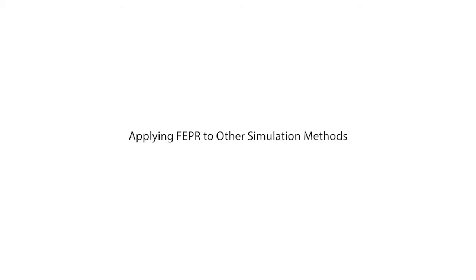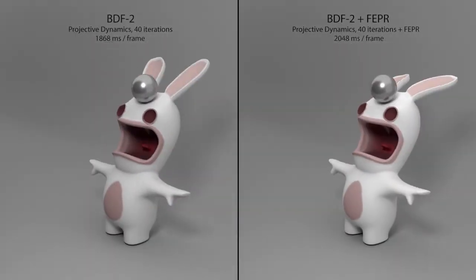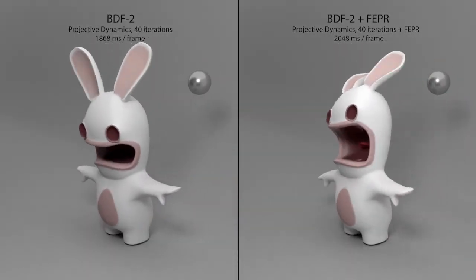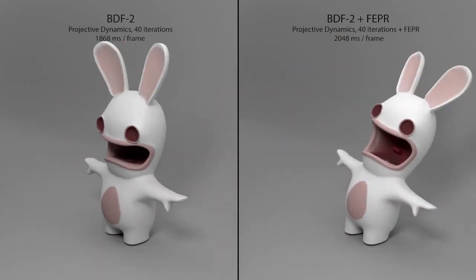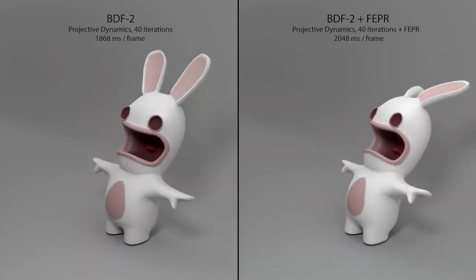Our projection could be combined with many physics-based simulation methods. BDF2 produces plausible motion, but we wanted a more frantic-looking rabbit. Adding fast energy projection makes the rabbit motion funnier.